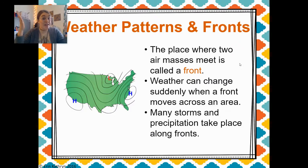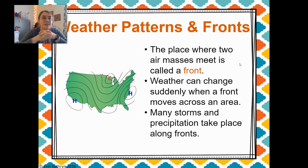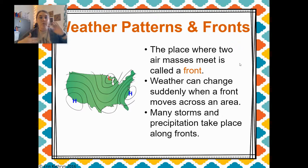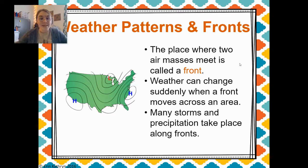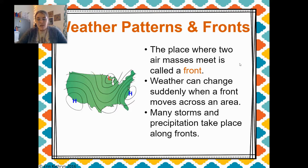The place where two air masses meet is called a front. Weather can change suddenly when a front moves across an area. We see that all the time in Texas, where sometimes it gets cold out of nowhere or warm out of nowhere. Many storms and precipitation take place along these fronts.